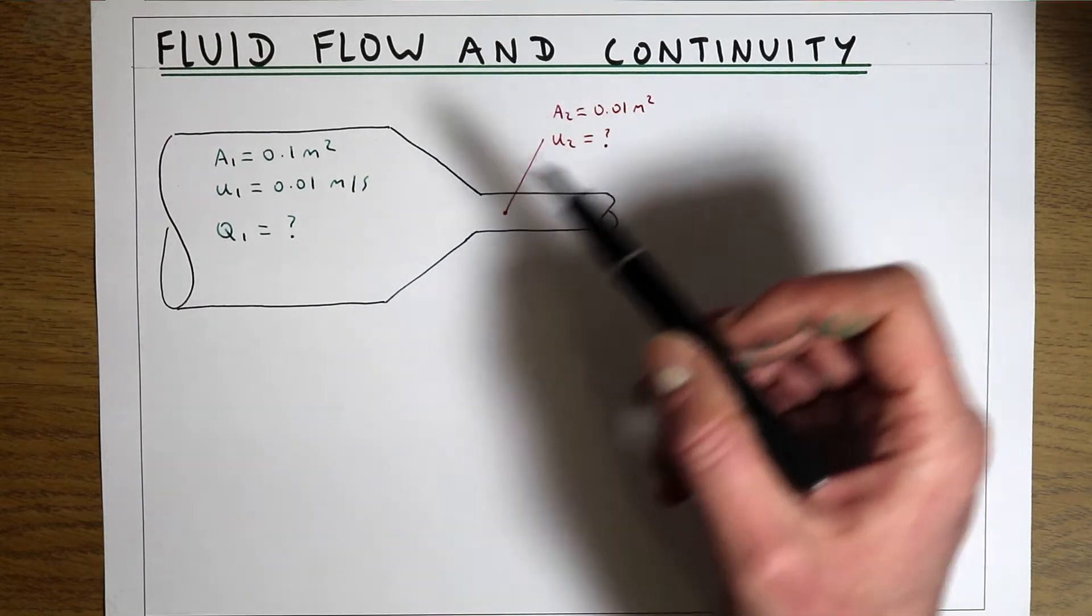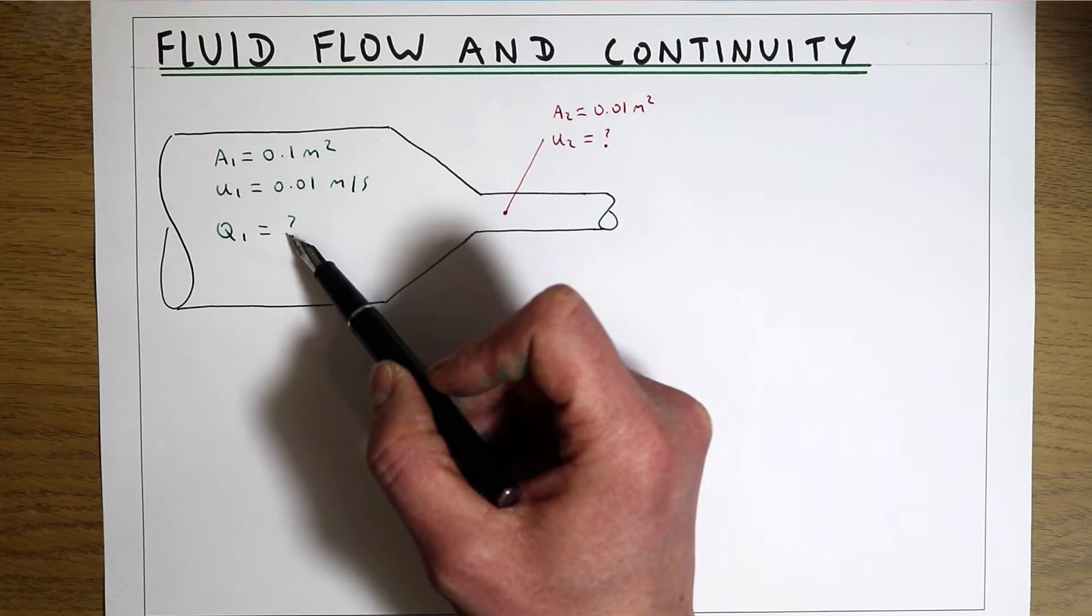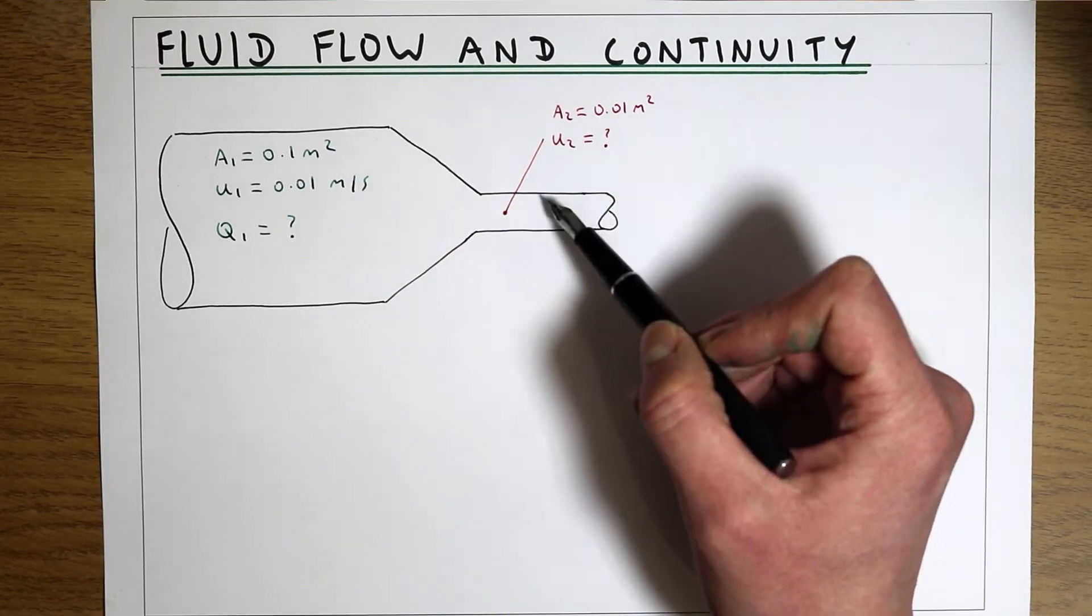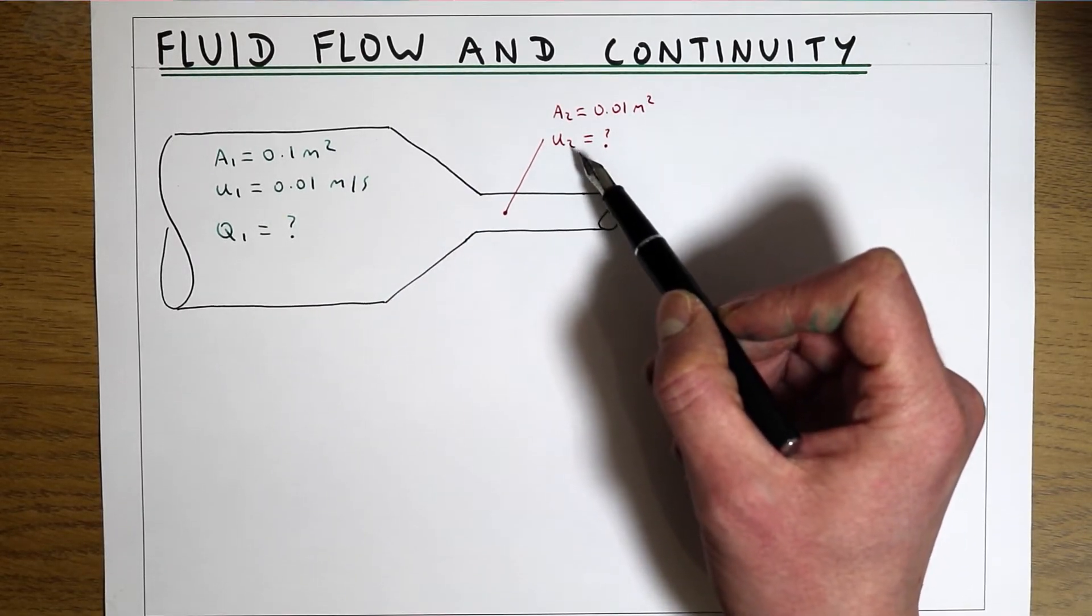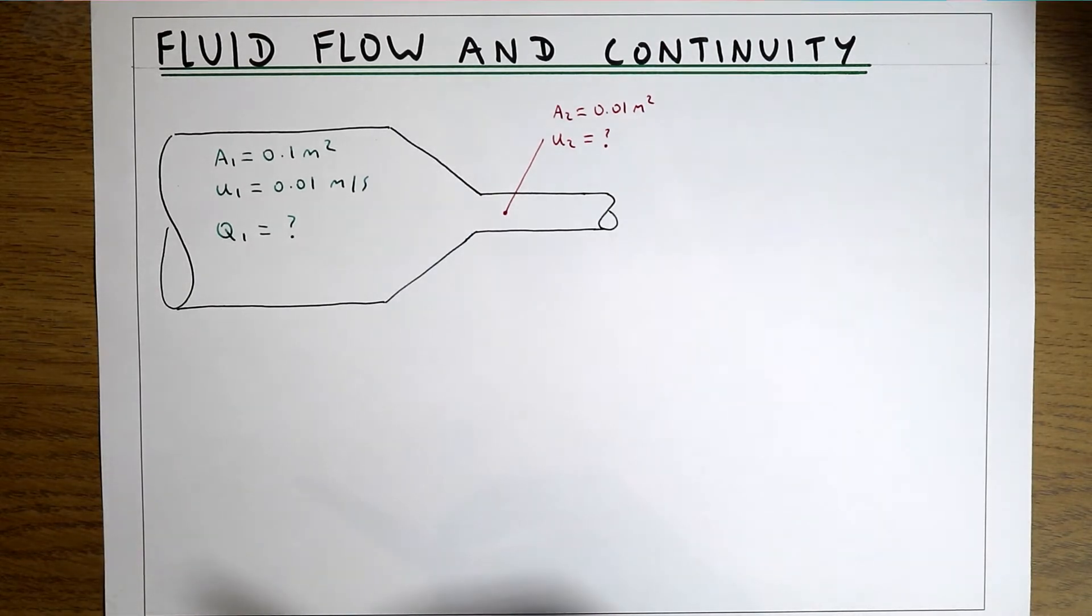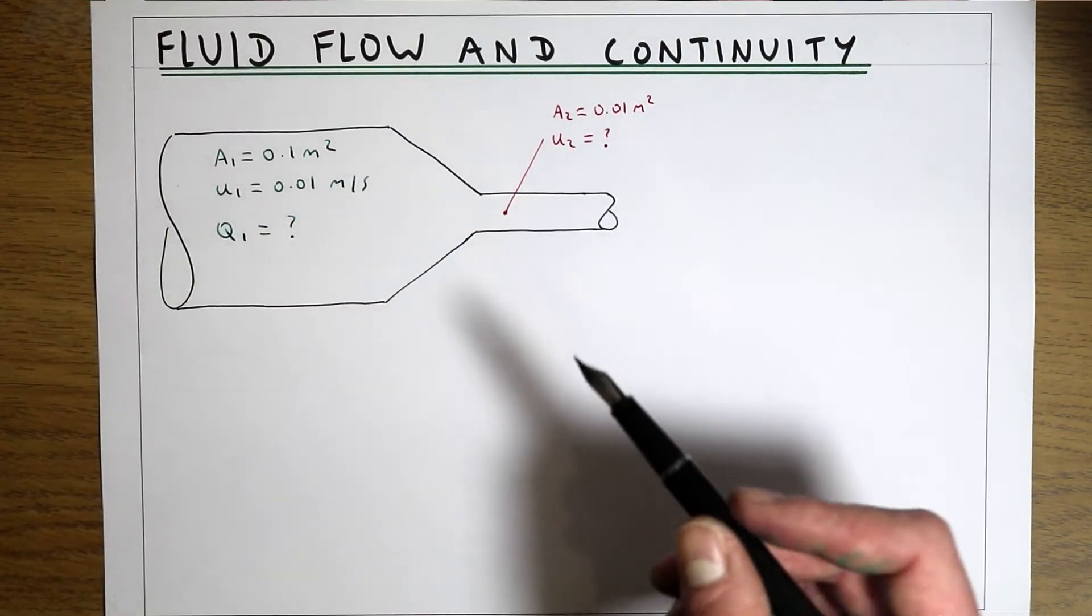What we want to find is what is the discharge at point 1 and what is the new velocity at point 2. To do that we're going to think about the principles of fluid flow and continuity.